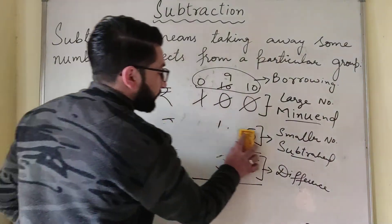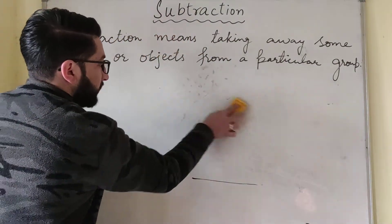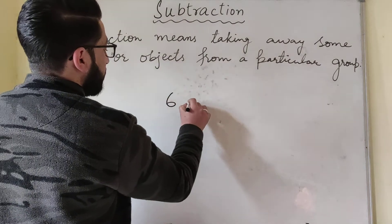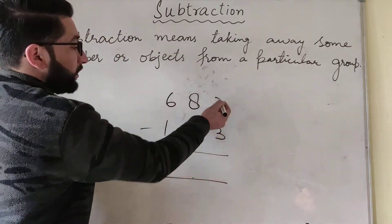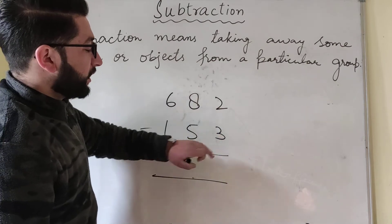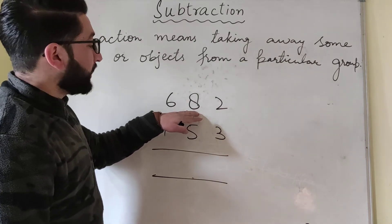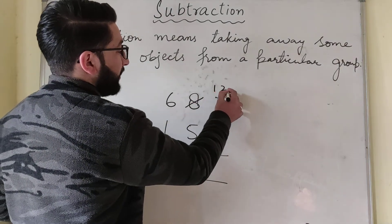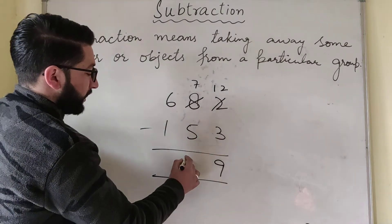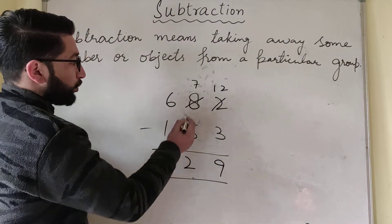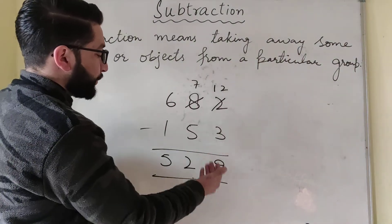I will give you one more example. Suppose if we have a number 682 and we have to subtract 153 from it. Here the top number is smaller and the bottom number is larger. So what will this 2 do? It will take help from this 8. This 8 will give away 1 to this 2. It will become 12 and this 8 will remain as 7. So 12 minus 3 is 9, 7 minus 5 is 2, 6 minus 1 is 5. So this 2 has borrowed 1 from this 8.